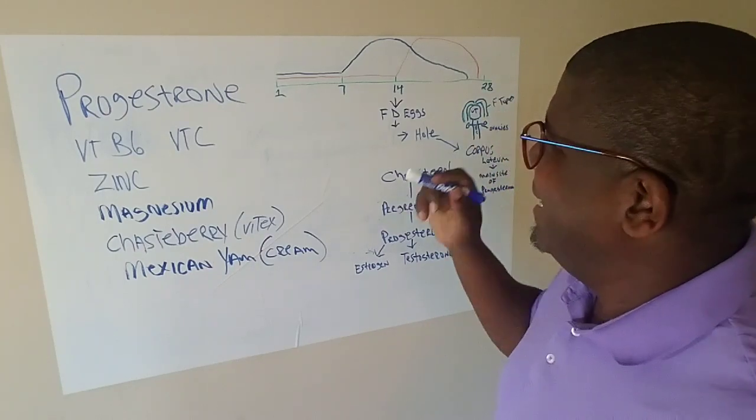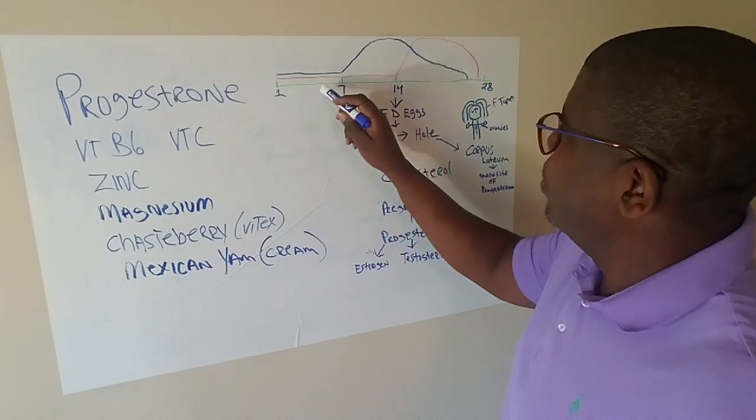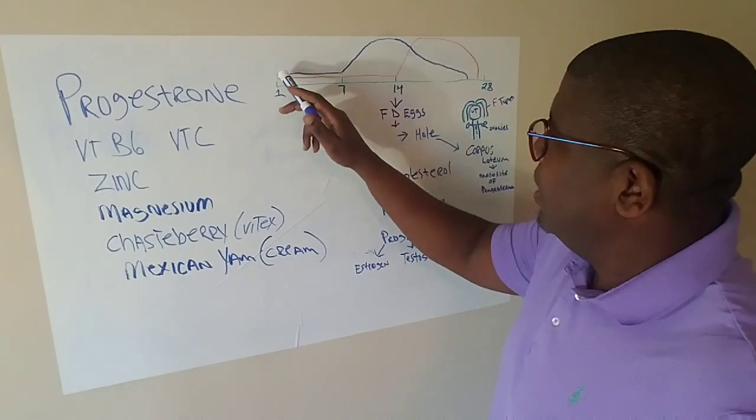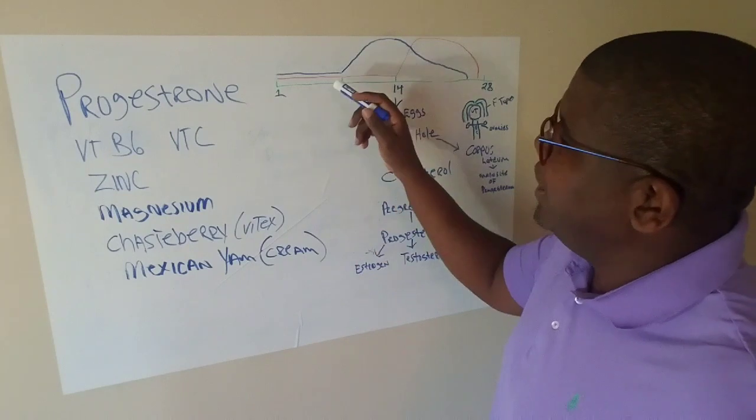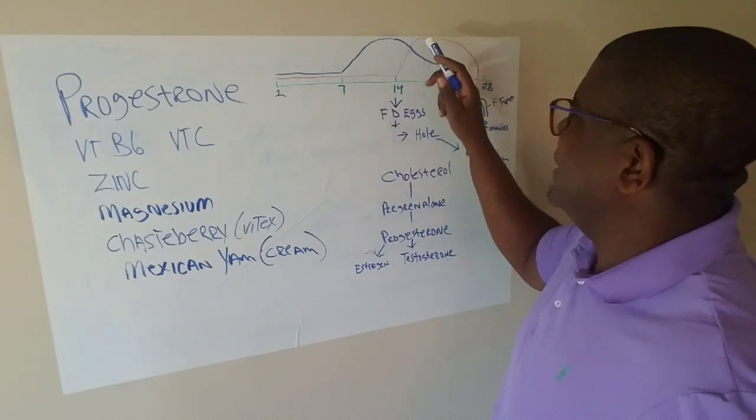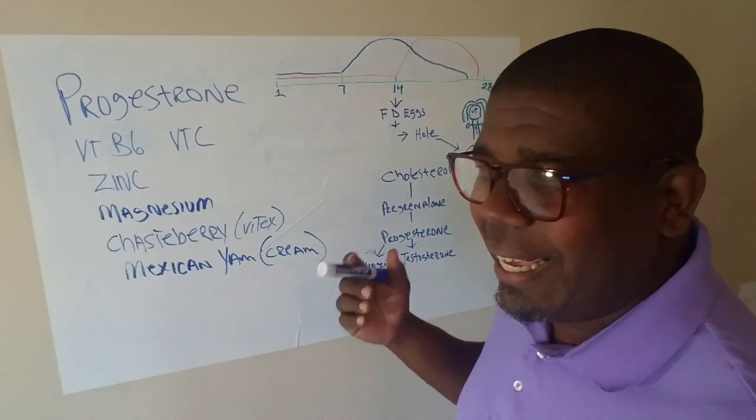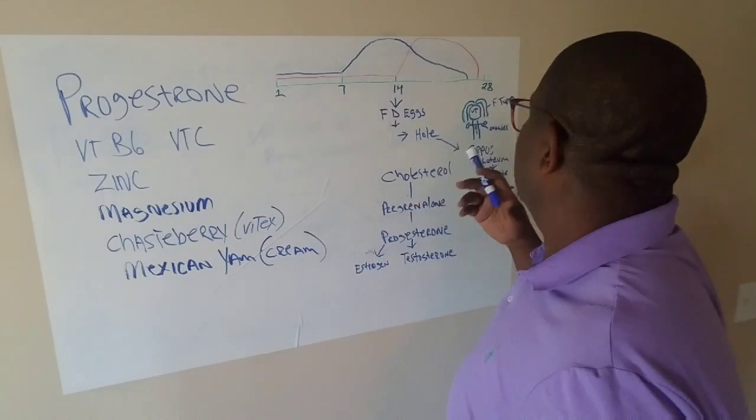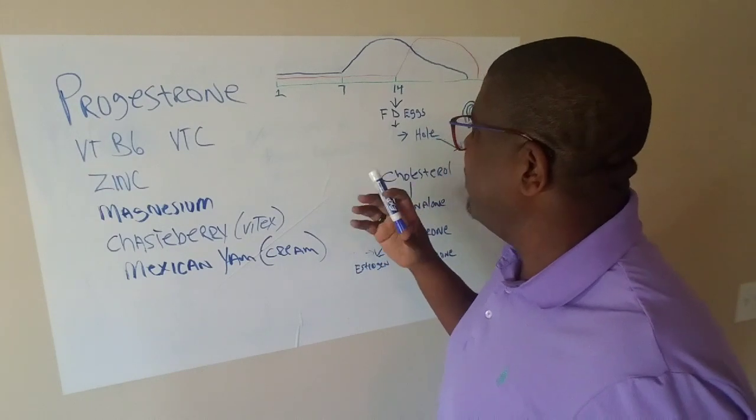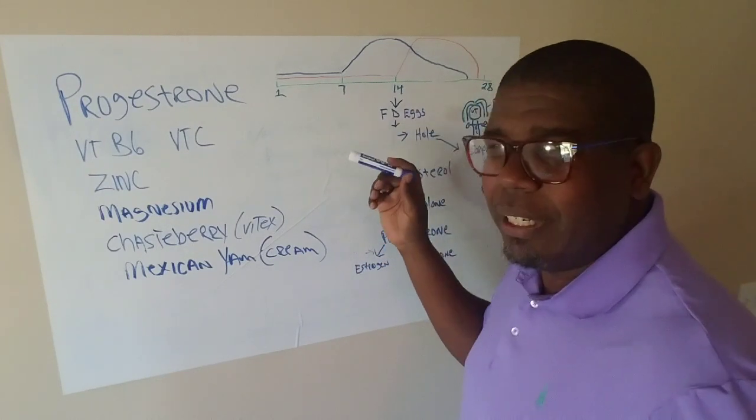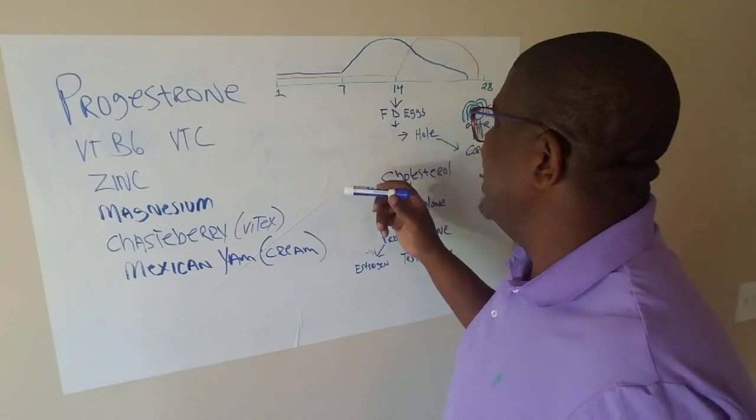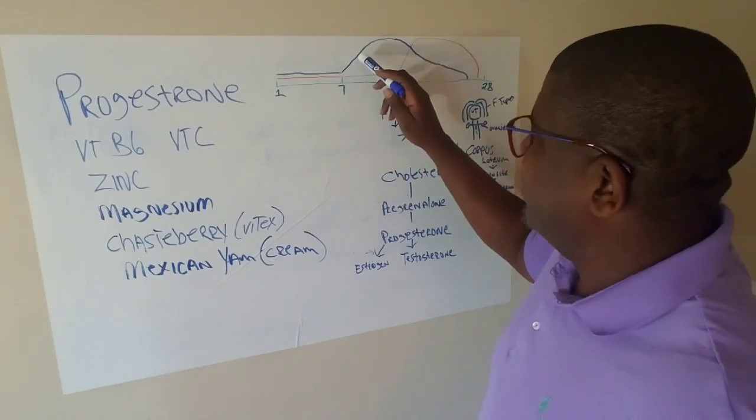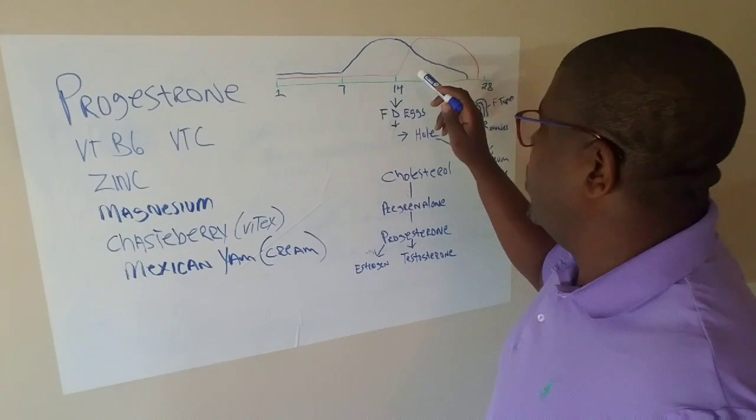Day one through seven, progesterone, which is in the red, is low, and estrogen is low as well. Once you reach day seven, estrogen tends to rise. That's because estrogen plays a key role in the development of the eggs and preparing the uterus to receive the egg to start that new life off correctly. Estrogen is very important and it is great for the body in its balanced levels. Estrogen rises, progesterone stays low up into day 14.